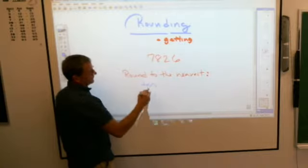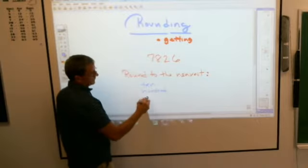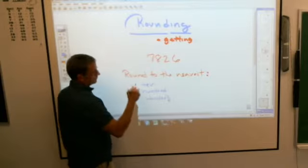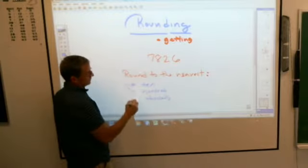I'm going to put a little hole in there because we're going to do a group of numbers. Say we're rounding to the nearest 10, rounding to the nearest 100, rounding to the nearest 1,000. Let's do those three. 1, 2, and 3.